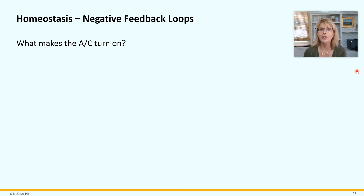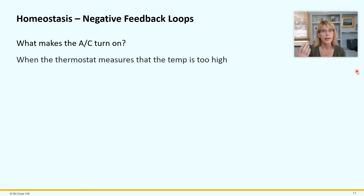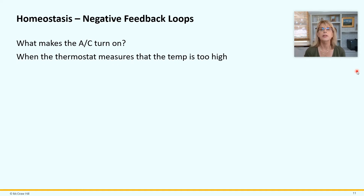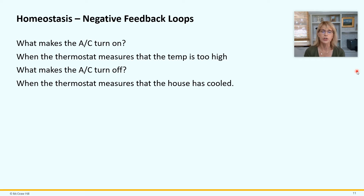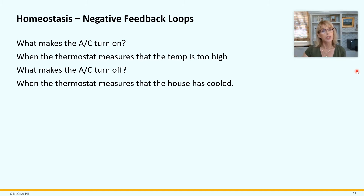Let's talk about air conditioning. What makes your air conditioner turn on? Your air conditioner turns on when the thermostat senses that the temperature in your house is too high. When that happens, the thermostat sends a signal to the air conditioner and turns it on. Does it stay on forever? No — it turns off when the thermostat measures that the temperature has come down into the Goldilocks zone. That's a negative feedback loop: something gets turned on, it causes an effect, and when that effect has been achieved, it gets turned off.